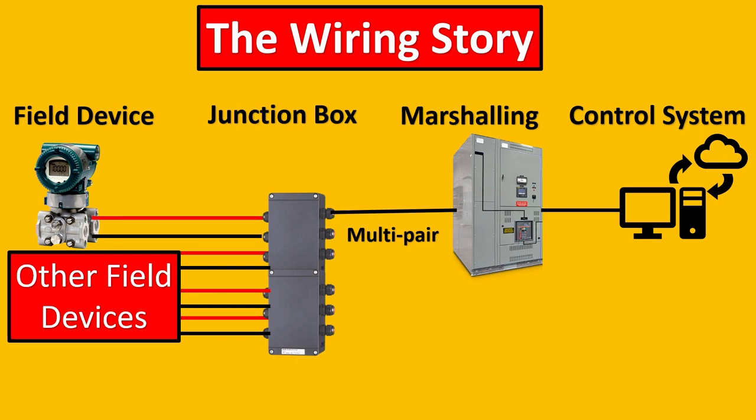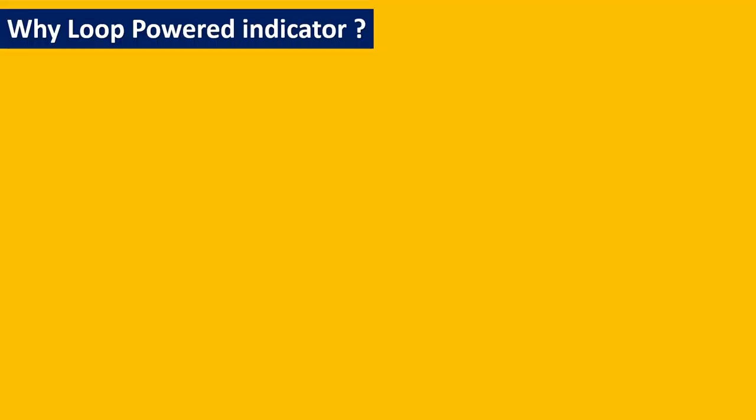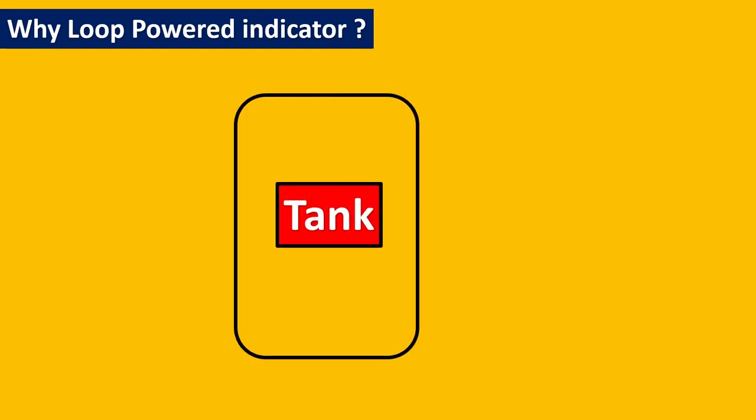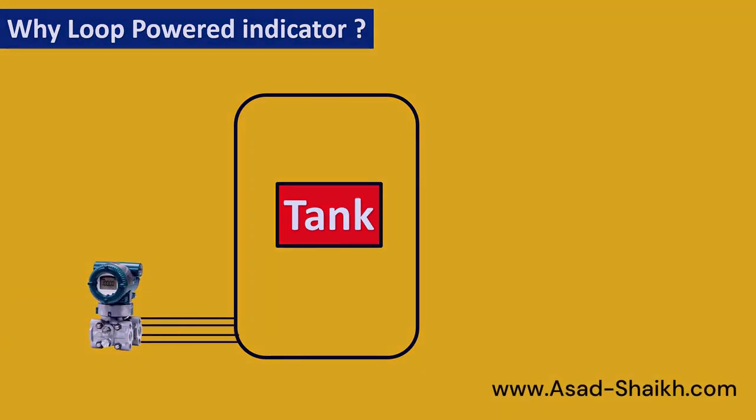Now do you see loop powered indicator? No, right. Then why is loop power indicator considered and what is the use of loop power indicator in the first place? So, for example, here's a tank and here's your transmitter placed to measure the level.